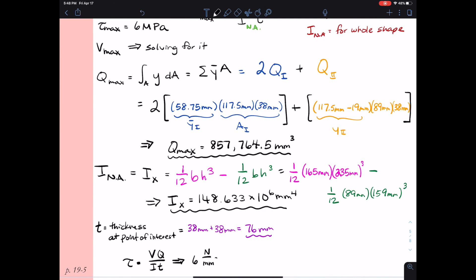Six megapascals is six newtons per millimeter squared. So I want to make sure all my units work out. And so everything is in millimeters right now. So I need to make sure my left hand side is in millimeters. I plug in the values for Q, for I, and for T.